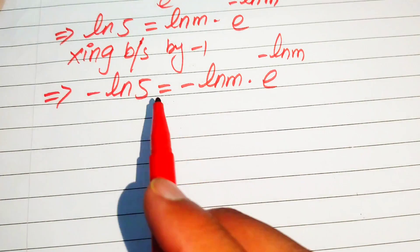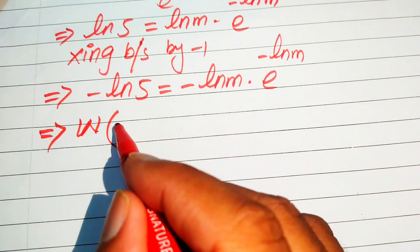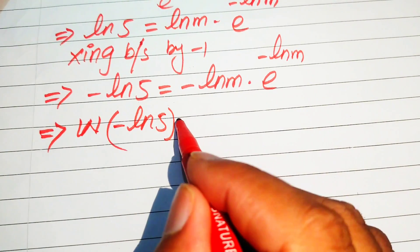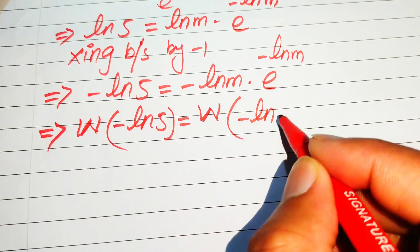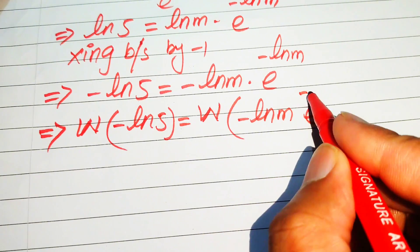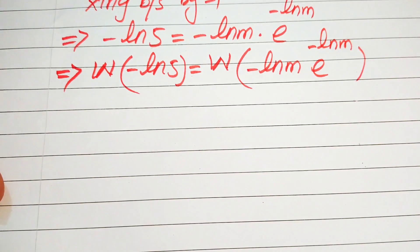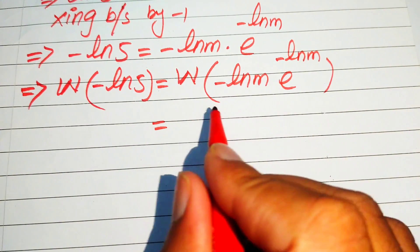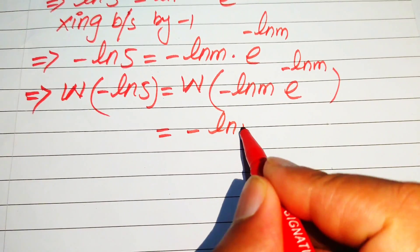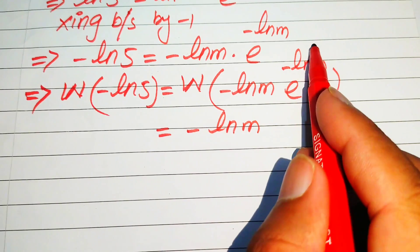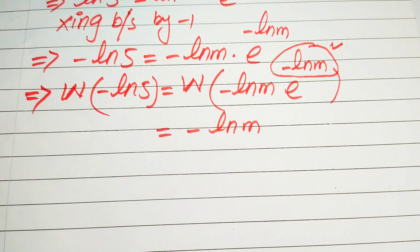Now we apply the Lambert W function on both sides. It is written as W of (minus log 5) equals W of (minus log m times e to the power of minus log m). This matches the Lambert W form, so the output of the right-hand side is minus log m.